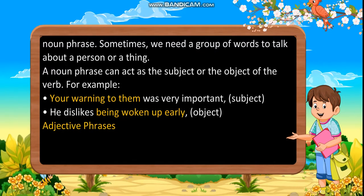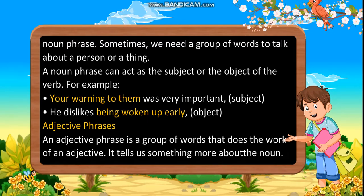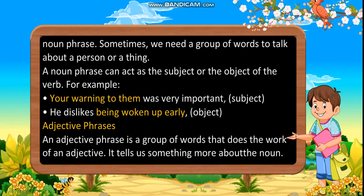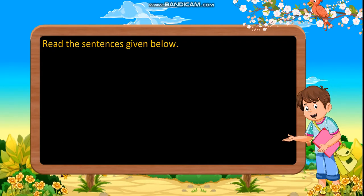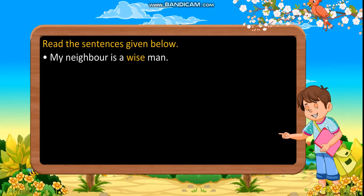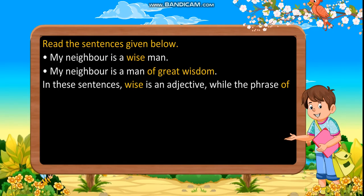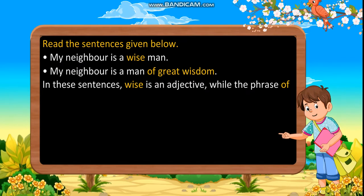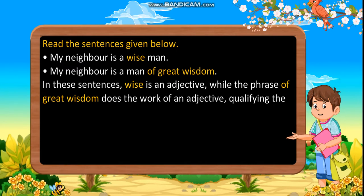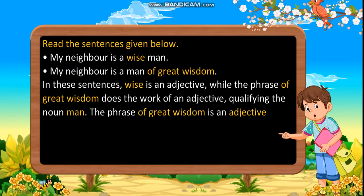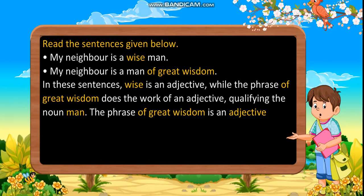Adjective Phrases. An adjective phrase is a group of words that does the work of an adjective. It tells us something more about the noun. For example: 'My neighbour is a wise man' versus 'My neighbour is a man of great wisdom.' Here, 'wise' is an adjective, while the phrase 'of great wisdom' does the work of an adjective, qualifying the noun 'man.' The phrase 'of great wisdom' is an adjective phrase.